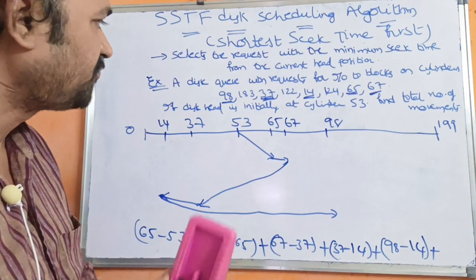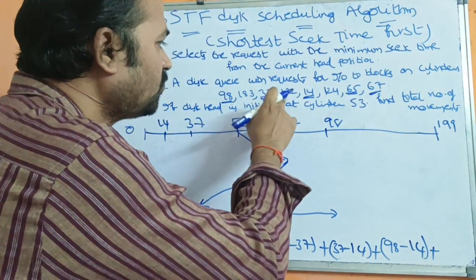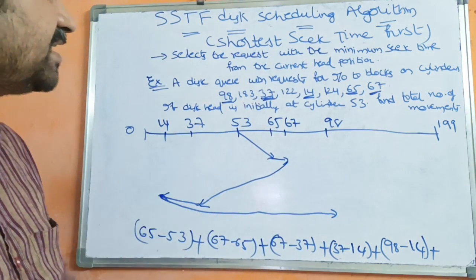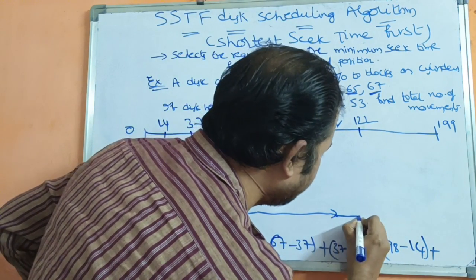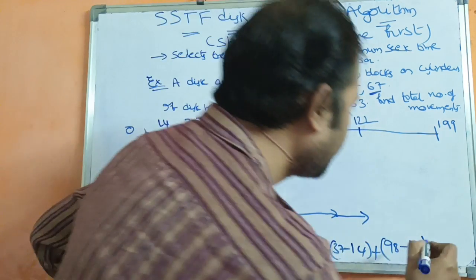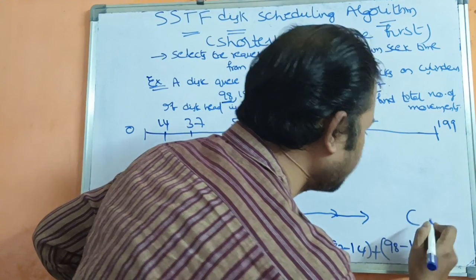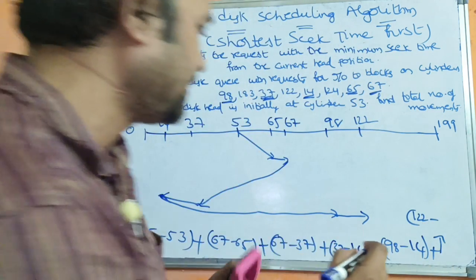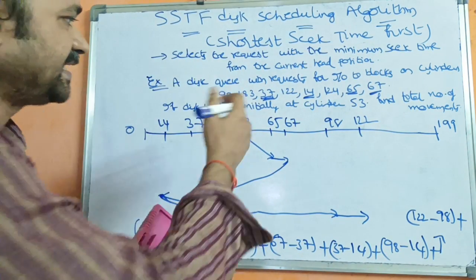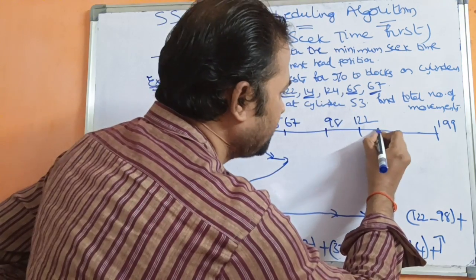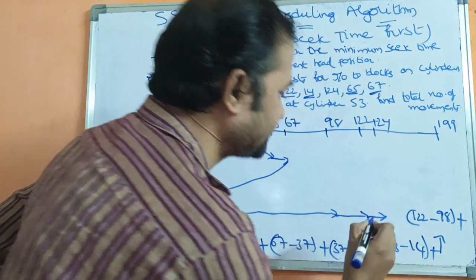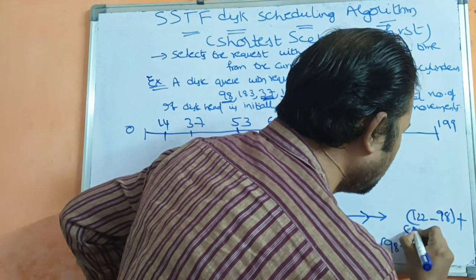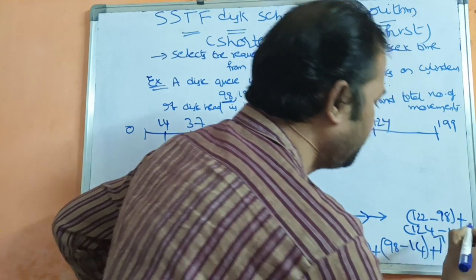From cylinder 98, the remaining requests are 183, 122, and 124. The nearest value is 122. So the movement is 122 minus 98. Next, from 122, the nearest value is 124. The movement is 124 minus 122.